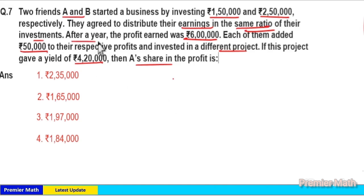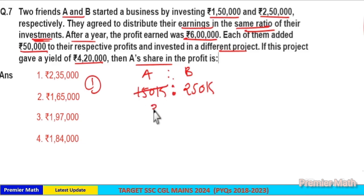Here, we don't have to care about the year because years for both A and B are same. Now we only have to care about the investment. In the first project, A and B invested ₹150,000 and ₹250,000. The ratio is 50 goes 3 times in 150, 5 times in 250. So 3 is to 5 is the ratio of investment.